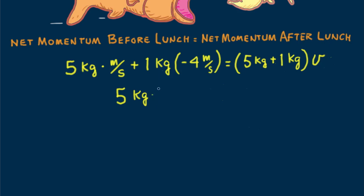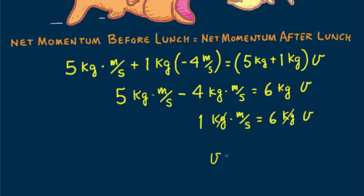So we see the initial momentum is 5 kilograms meters per second minus 4 kilograms meters per second in negative direction relative to the large fish, which equals 6 kilograms times V. Combining terms and canceling kilograms, we find V equals 1/6 meters per second.